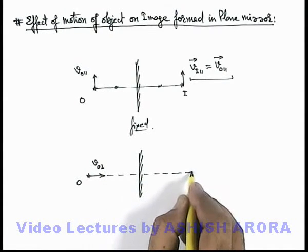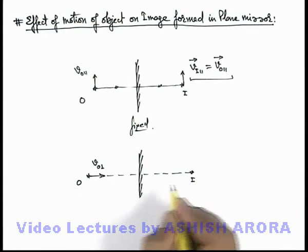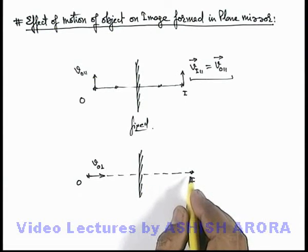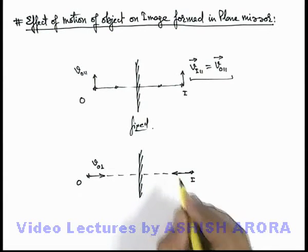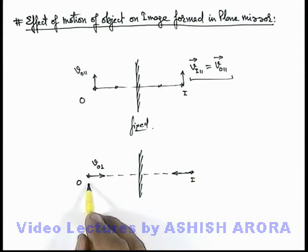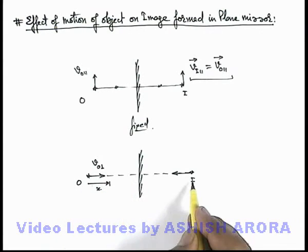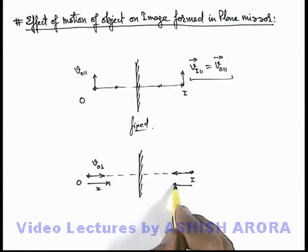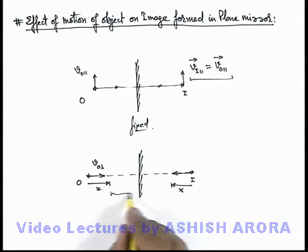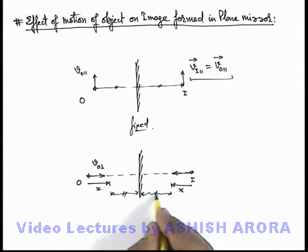then the image, which is located exactly at the same distance behind the mirror, will start moving in the opposite direction. Because if the object is displaced by distance x toward the mirror, then the image will also be displaced by a distance x toward the mirror, so that the remaining distances will remain the same for the object as well as for the image.